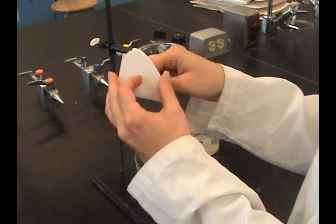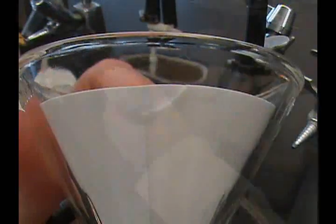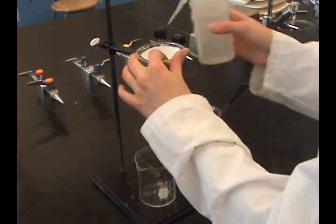Tear off a small portion of the corner to allow a tight fit between the funnel and paper. Place the cone into the funnel and moisten with some solvent.